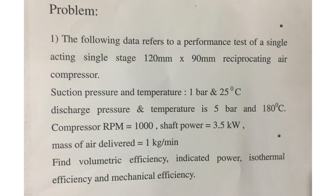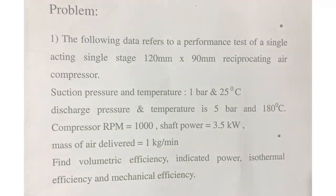Suction pressure and temperature are 1 bar and 25°C. Discharge pressure and temperature are 5 bar and 180°C. Compressor RPM is 1000. Shaft power (also known as brake power) is 3.5 kW. Mass of air delivered is 1 kg/min. Find: volumetric efficiency, indicated power, isothermal efficiency, and mechanical efficiency.